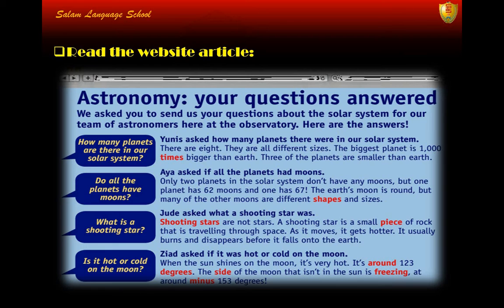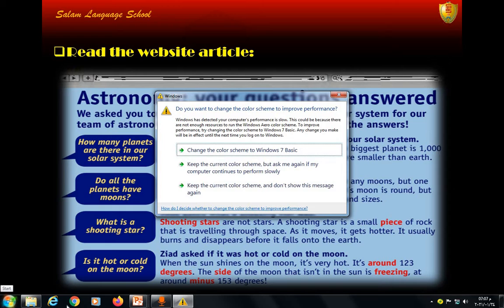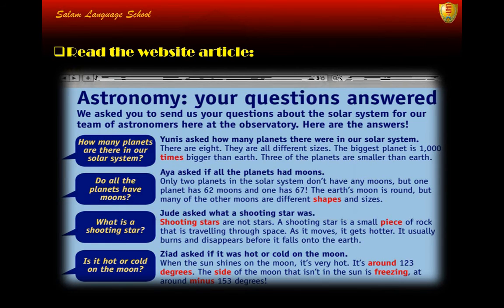The first question: how many planets are there in our solar system? Eunice asked how many planets there were in our solar system. Notice here that we have reported speech — the first question 'how many planets' becomes 'Eunice asked how many planets there were in our solar system.' So the grammar topic is reported speech.